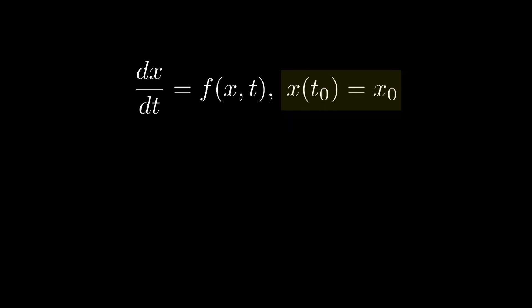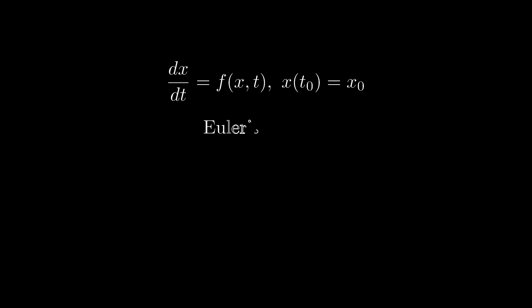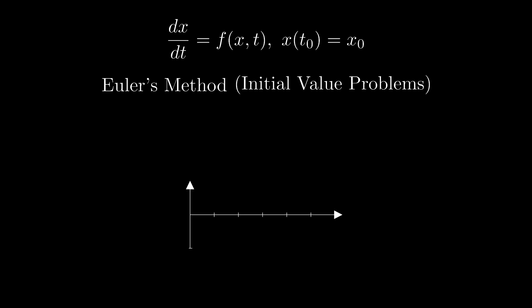The method we've been using actually has a name: Euler's method. Along with that, because of this initial condition, we typically call these types of problems initial value problems, or IVPs. Again, if we can't solve this analytically, we discretize t into a set separated by small time steps Δt.